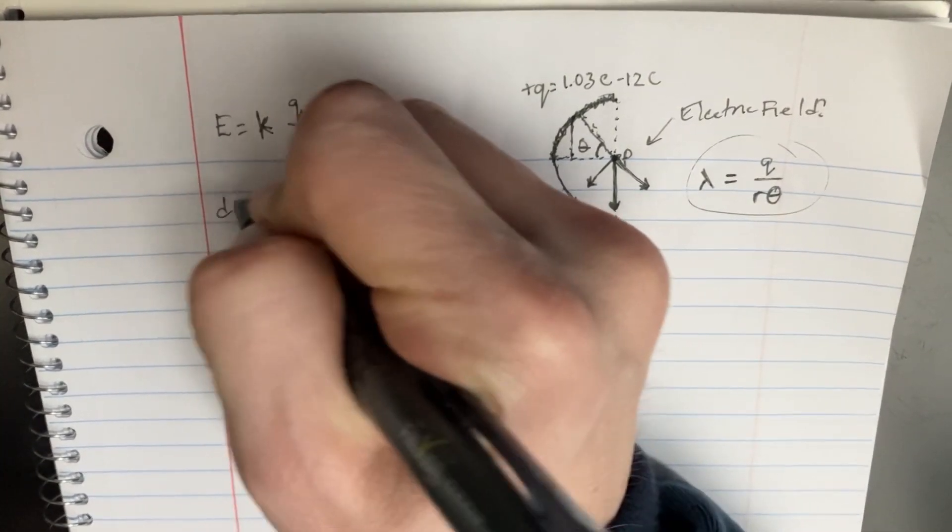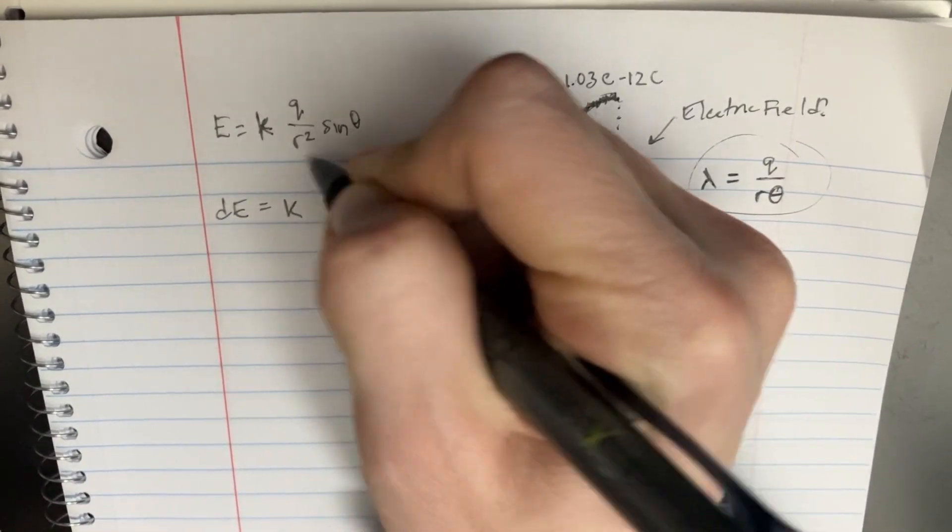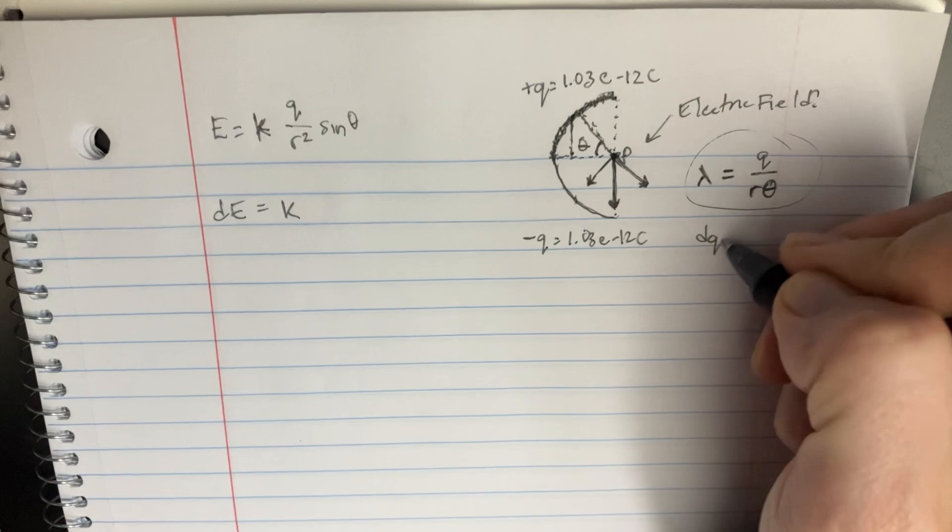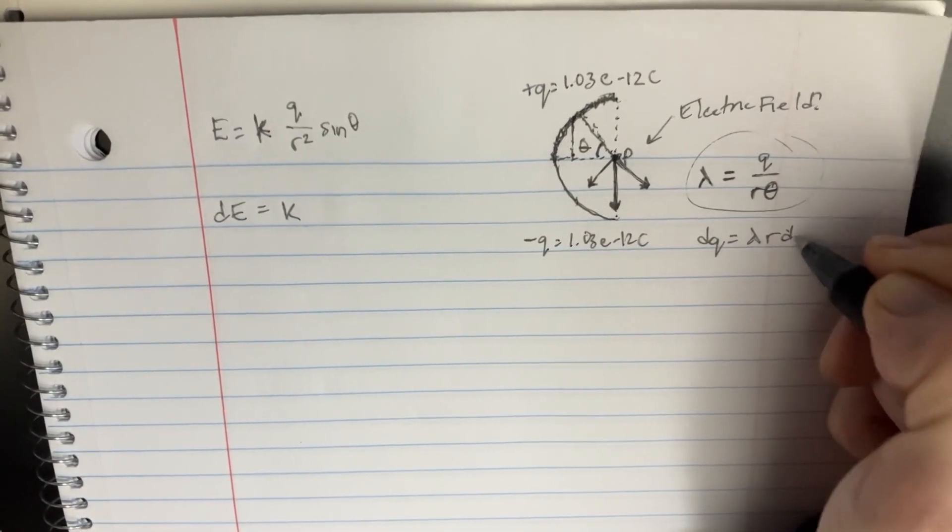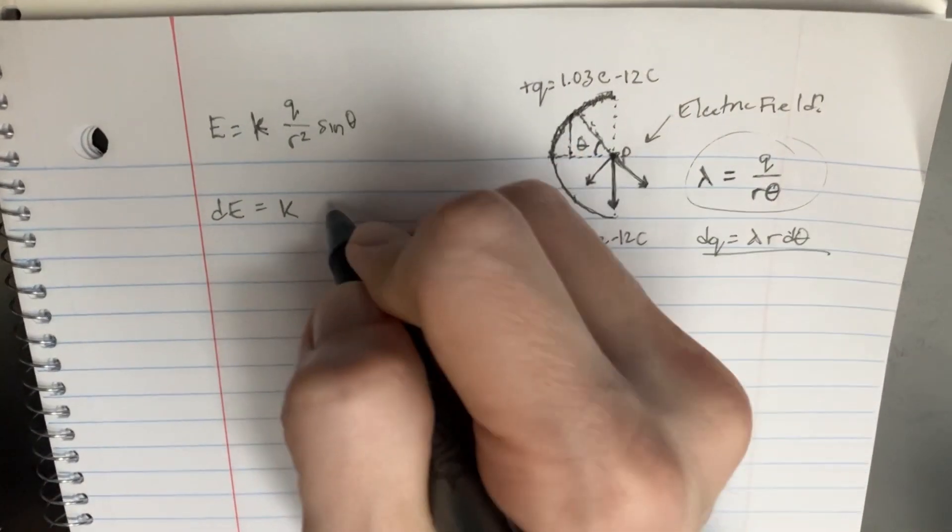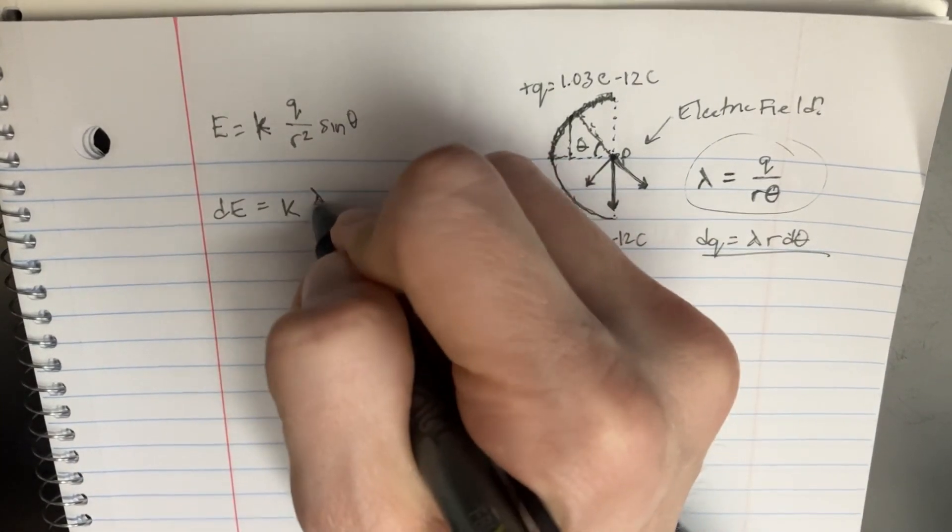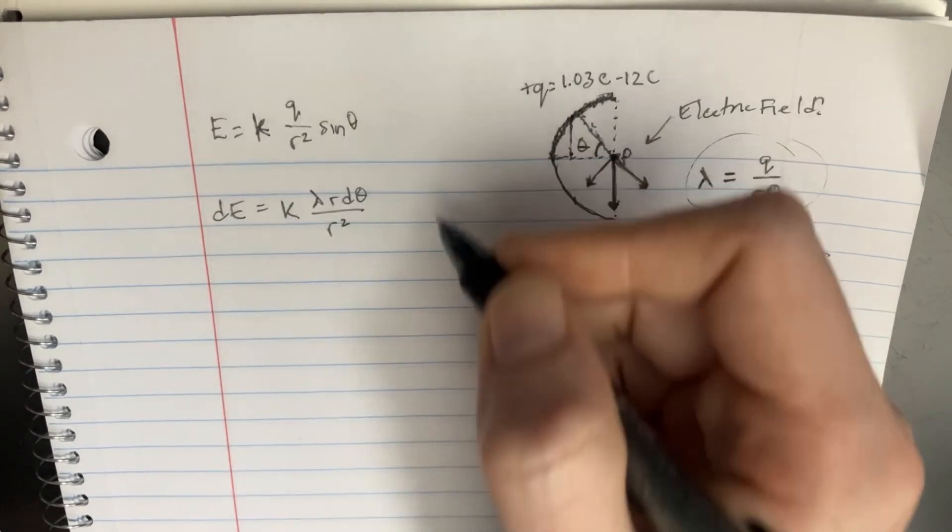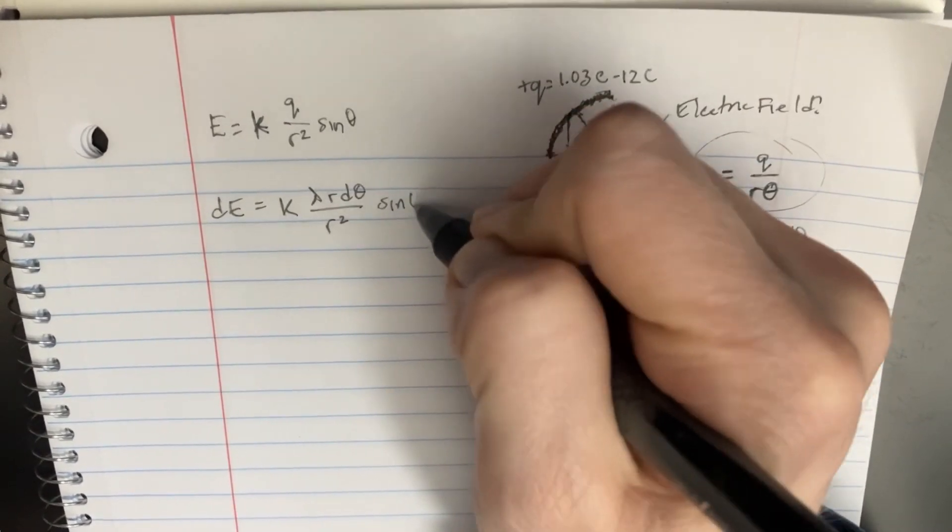But let's start with our dE equals K, and then we would have a dQ on the top. But what is dQ? dQ would be equal to lambda R d theta. And so this is what we can plug in for dQ at the top here. Lambda R d theta, and then we see that's R squared on the bottom, which is cool, it's getting cancelled, and we're left with the sine theta.